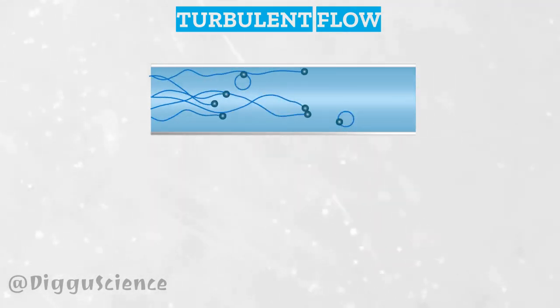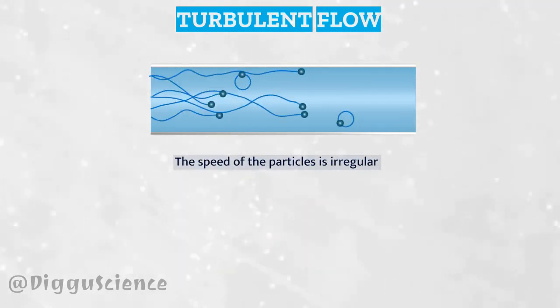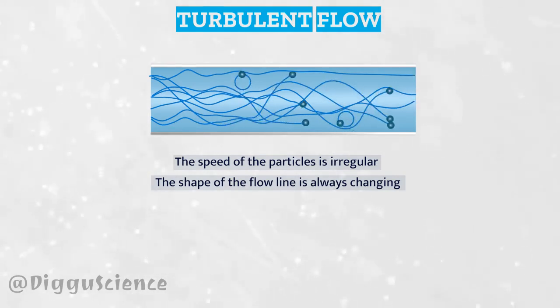In turbulent flow, the speed of the particles is irregular. The shape of the flow line is always changing.